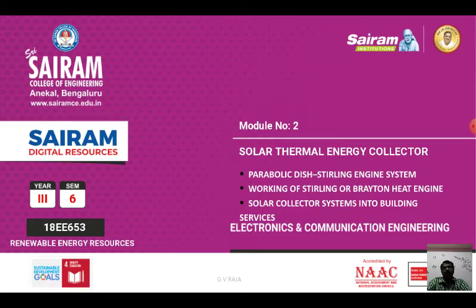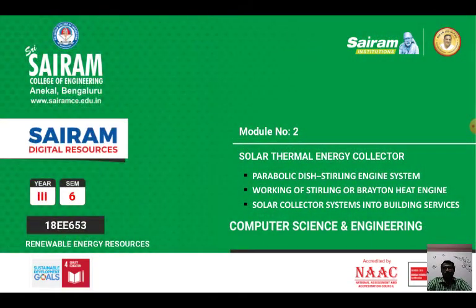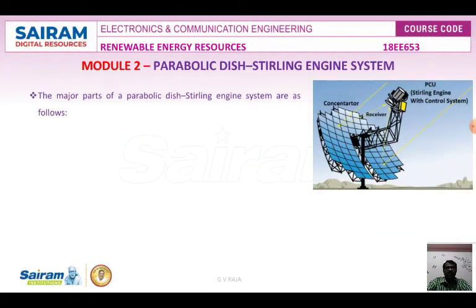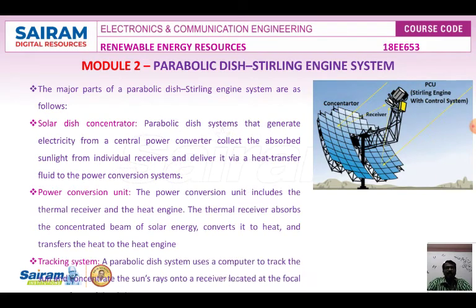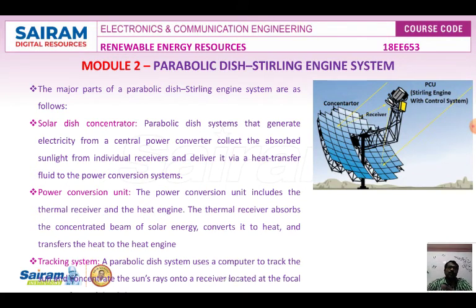In the previous video we covered the Stirling engine system and heliostat. The Stirling engine system is majorly used for the generation of electricity, both in heliostat and parabolic dish systems. In heliostat, two types of engine systems are used for electricity generation: the Rankine cycle and the Stirling engine.